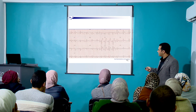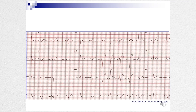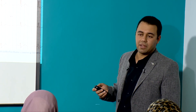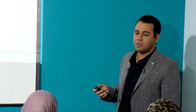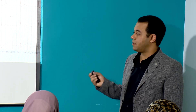How about this one? Narrow complex, irregular, tachy in some places — around 100. P waves? Yes. What's this rhythm? Narrow complex, irregular tachycardia with P waves — sinus arrhythmia. Well done, this is sinus arrhythmia.